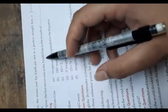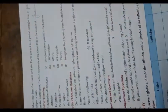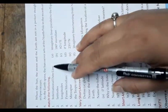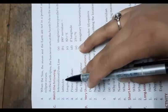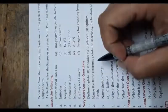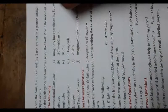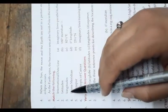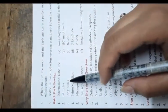As the Earth revolves, the Sun never sets at the North Pole in the month of June — J-U-N-E. Match the following: International Date Line — it is the 180-degree meridian. Latitudes — imaginary lines parallel to the equator. Longitudes — imaginary lines running from the North Pole to the South Pole.